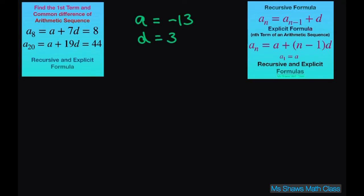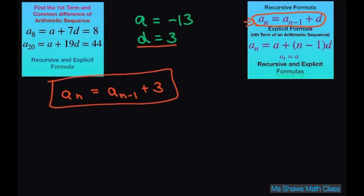So for the recursive formula, you just use this formula here. And all you do is copy this down. A sub n equals, it means your current term or the term you're looking for is your previous term plus your common difference, which is d. That's it. So that's all you have to do for that.